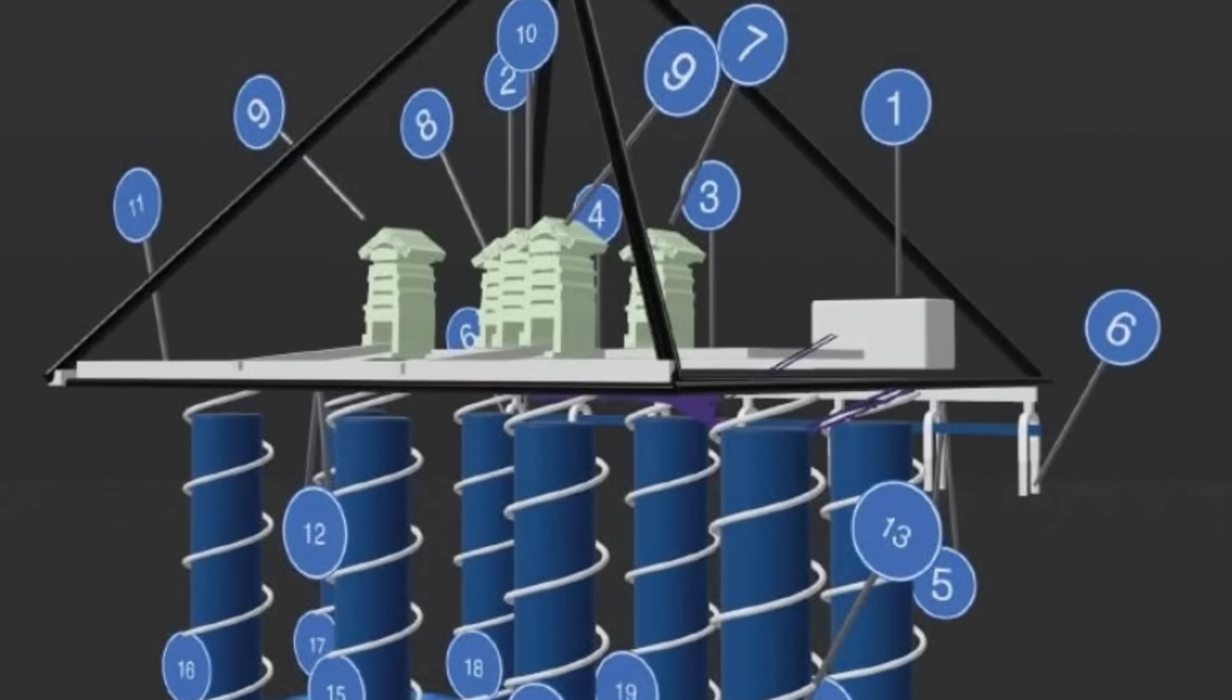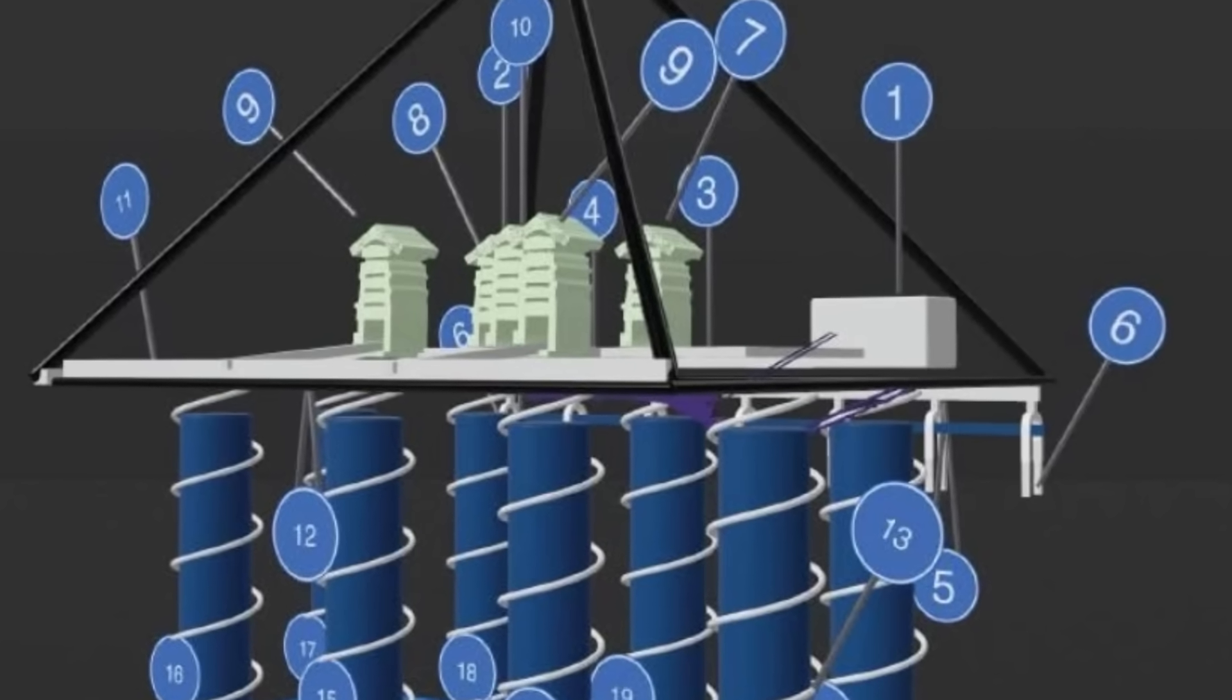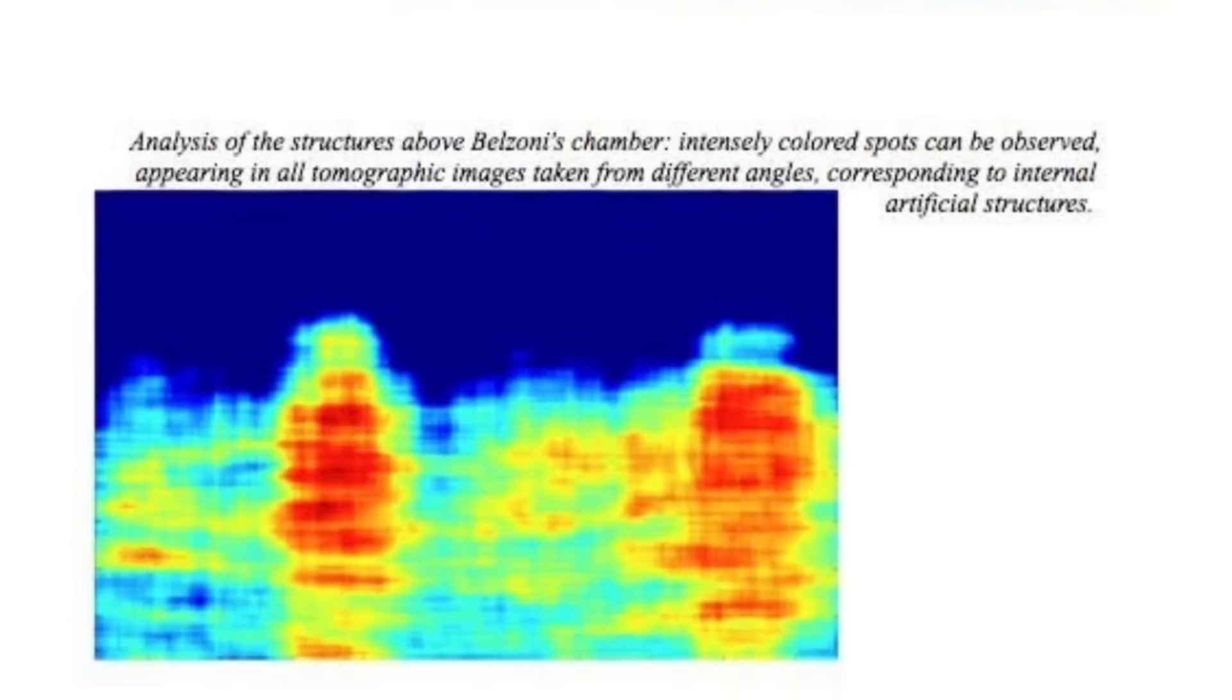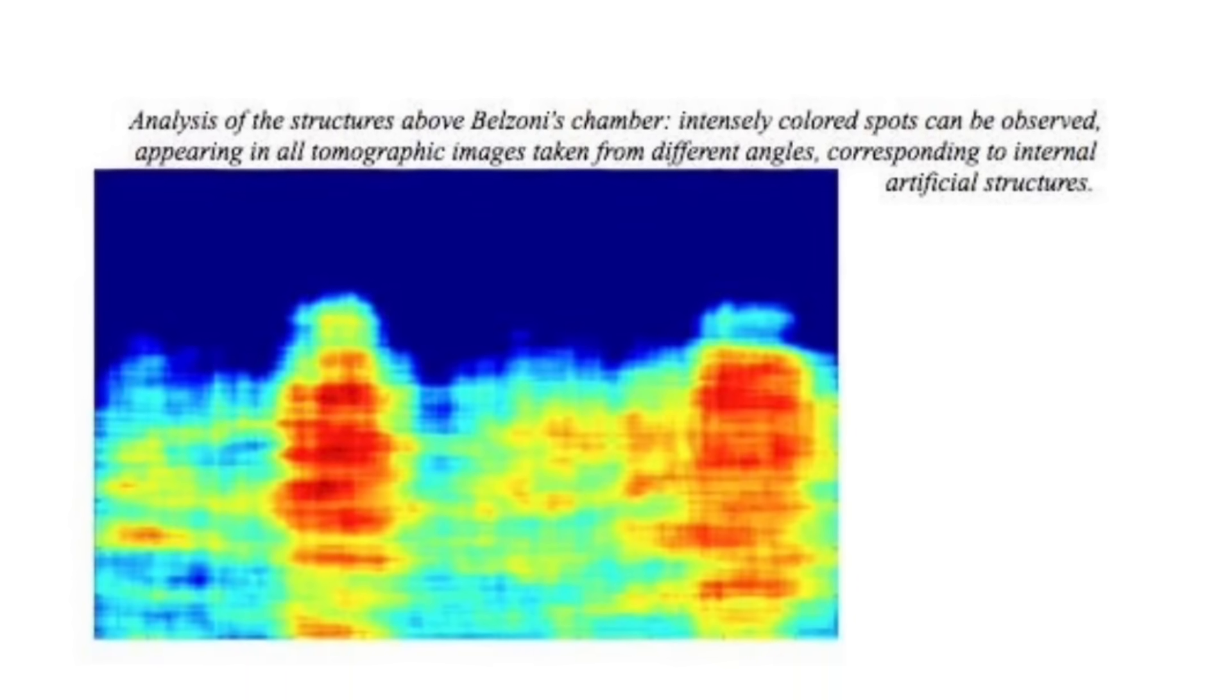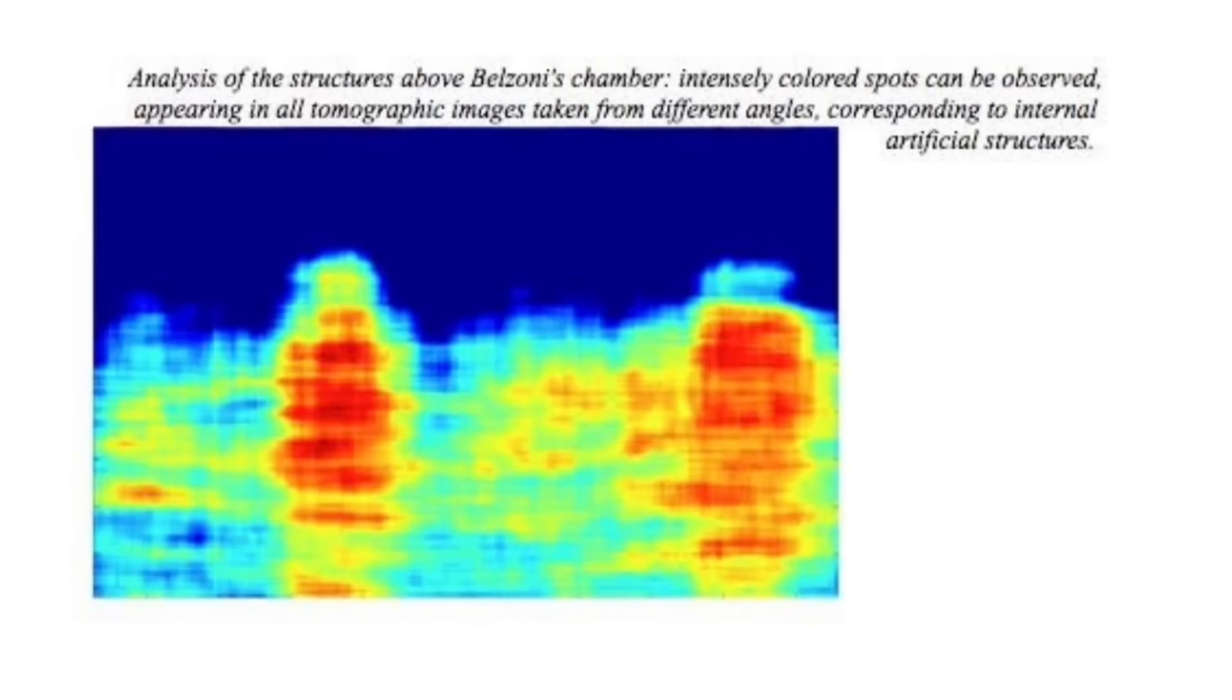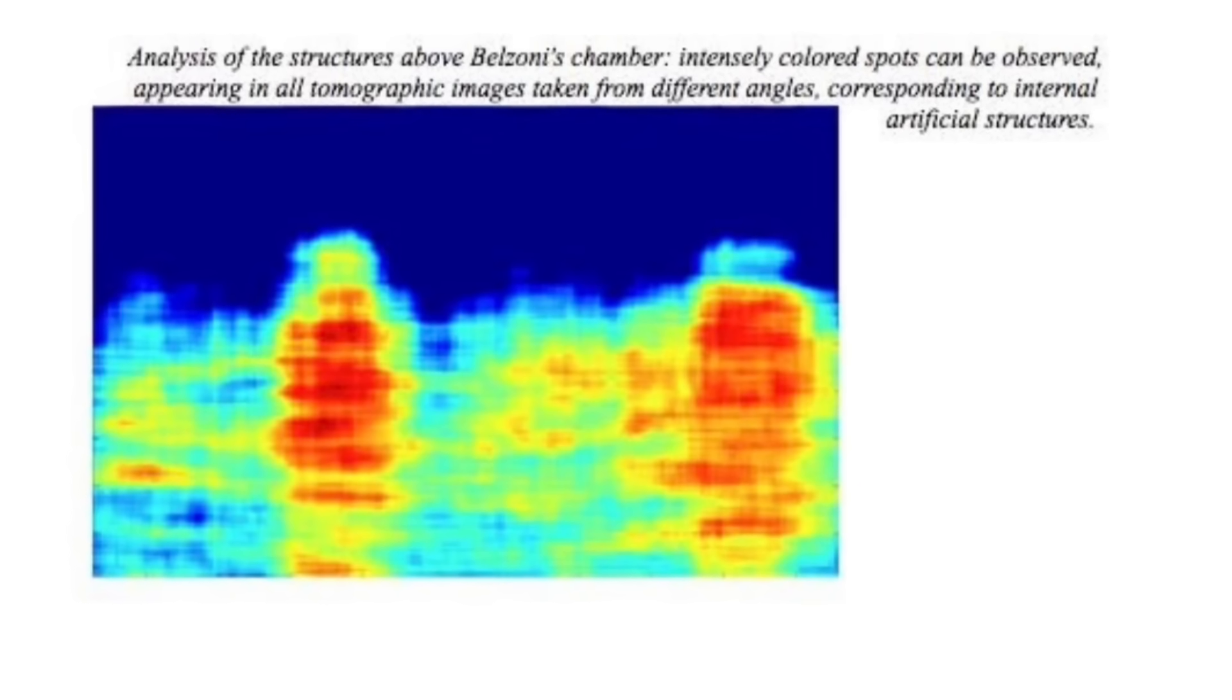The analysis of the structures above Belzoni's chamber are intensely colored spots which can be observed appearing in all tomographic images taken from different angles corresponding to the internal artificial structures.